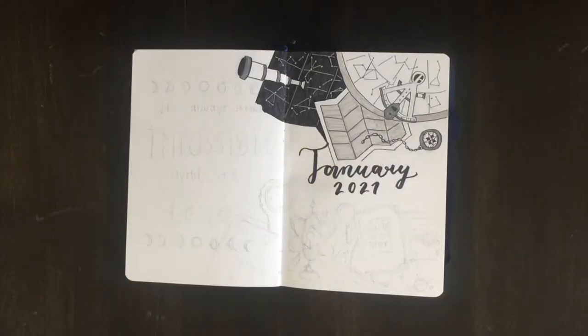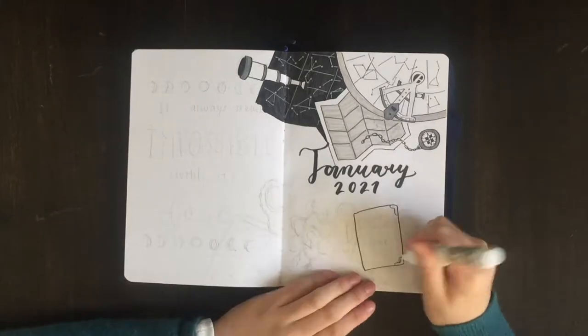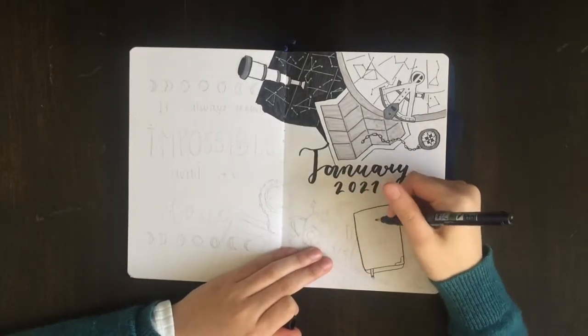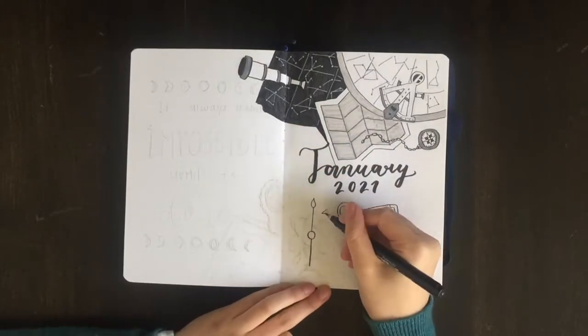After lettering my title in a black tombo, I'm moving on to the bottom half of the right page to draw in a bit more illustrations. Here I have a book as well as a magnifying glass and some more star charts.